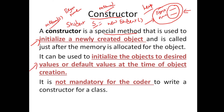There are two types of constructors we will be seeing. We can initialize an object with some default values, or you can pass the desired values and initialize an object. One important thing: it is not mandatory for a coder to explicitly write a constructor — a constructor is created by default in Java.